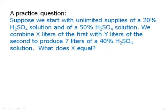Here's a practice question. Pause the video, and then we'll talk about this. Okay, here we have a question about H2SO4 sulfuric acid. You don't need to know about that. Suppose we start with unlimited supplies of a 20% solution and a 50% solution. We combine X liters of the first with Y liters of the second to produce 7 liters of a 40% solution. What does X equal? So clearly, X plus Y equals 7. That's one equation that we have. We have X liters of the first thing, Y liters of the second thing, so X plus Y equals 7. That's one equation.